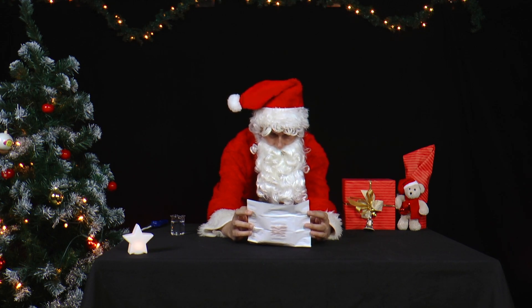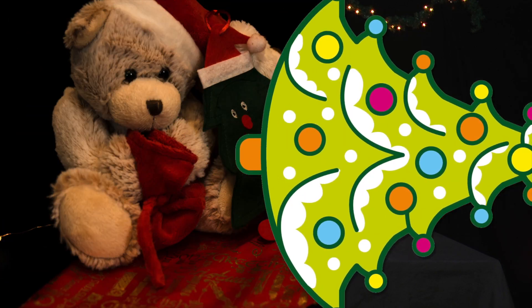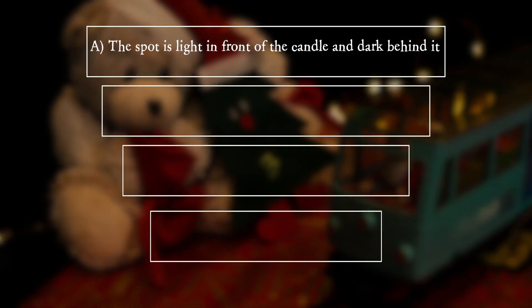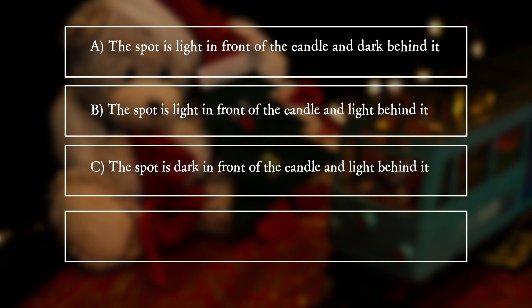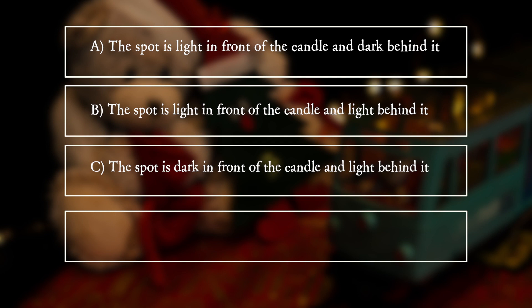What does he see? A. The spot is light in front of the candle and dark behind it. B. The spot is light in front of the candle and light behind it. C. The spot is dark in front of the candle and light behind it. D. The spot is dark in front of the candle and dark behind it.